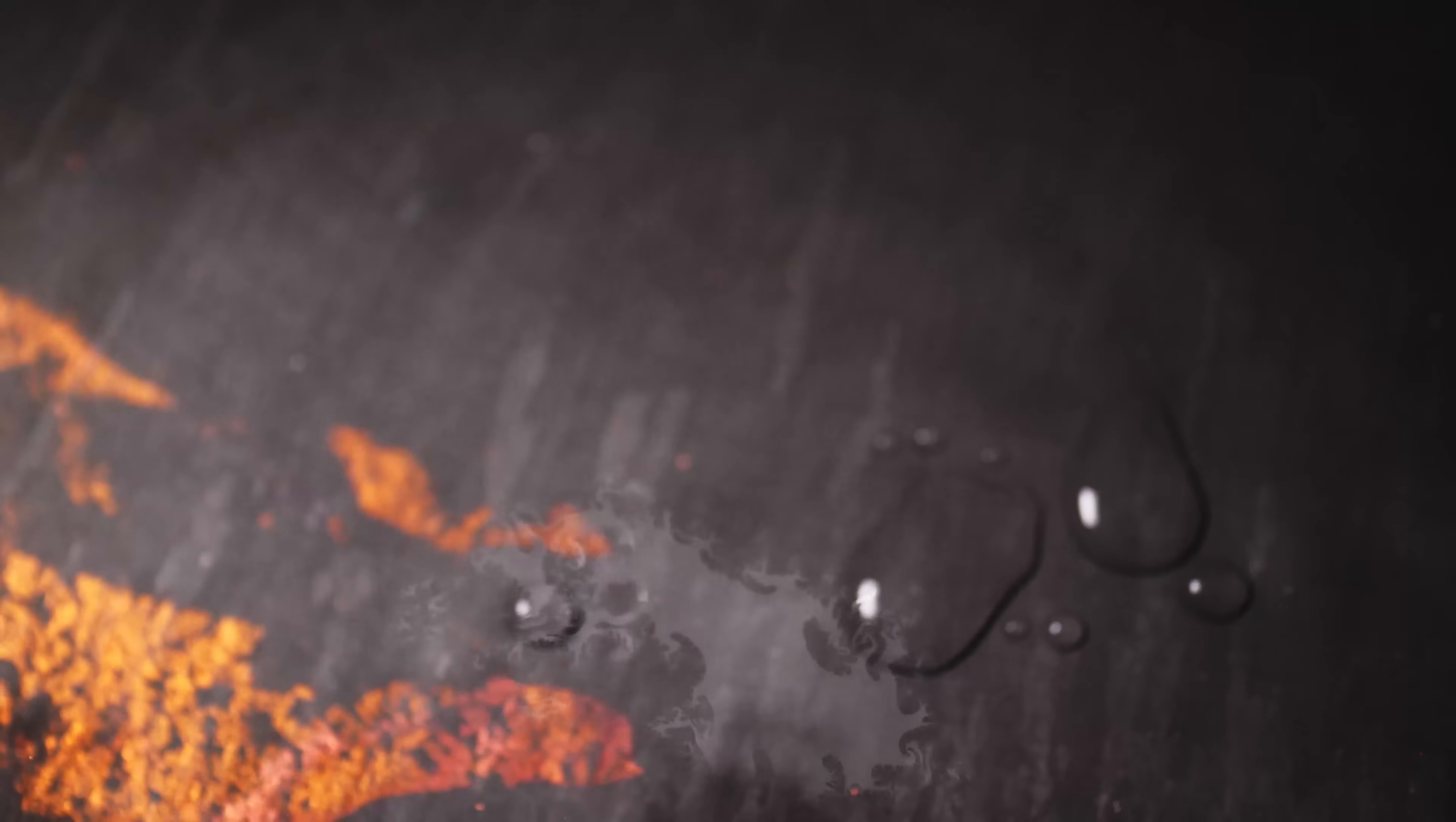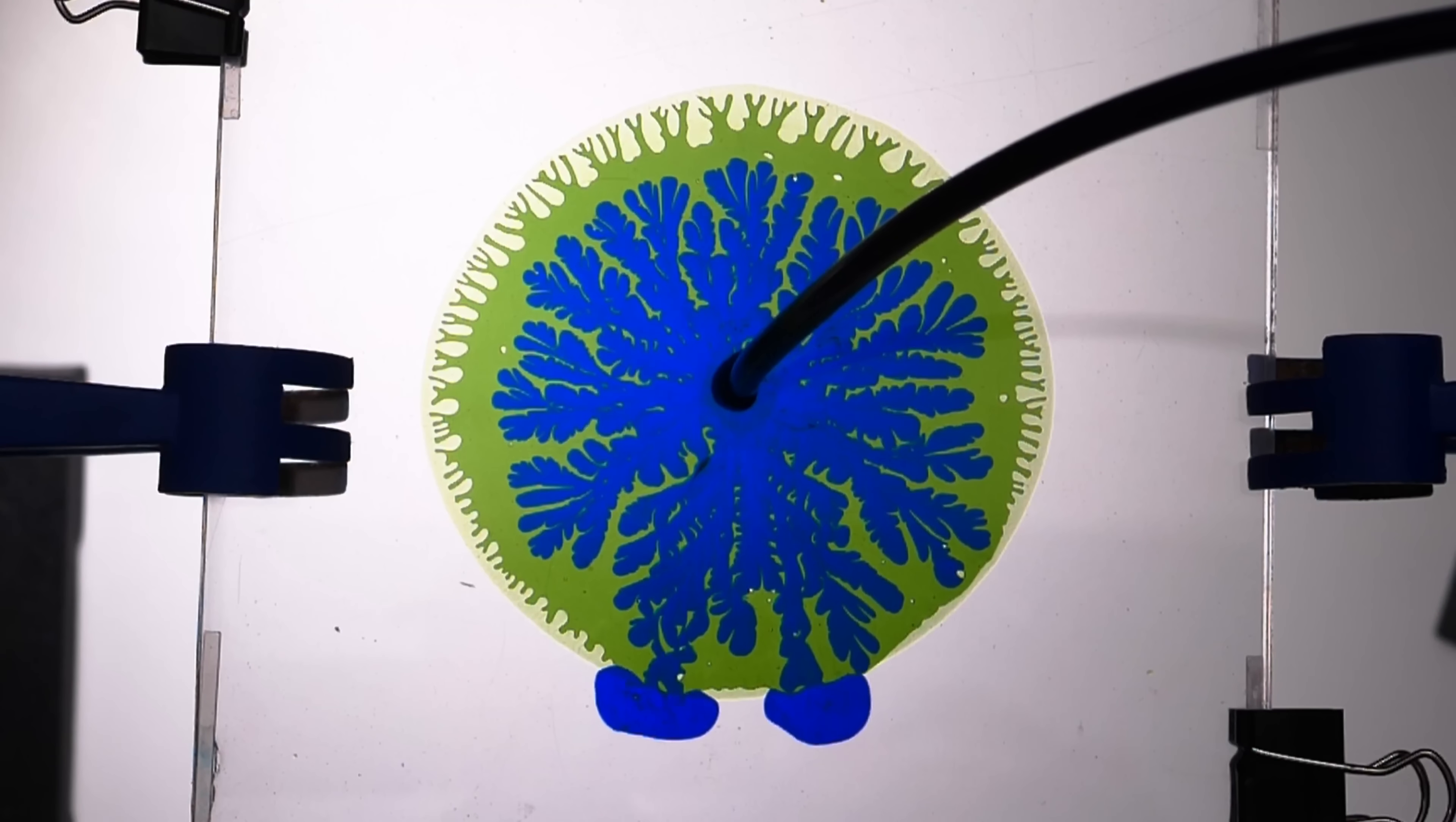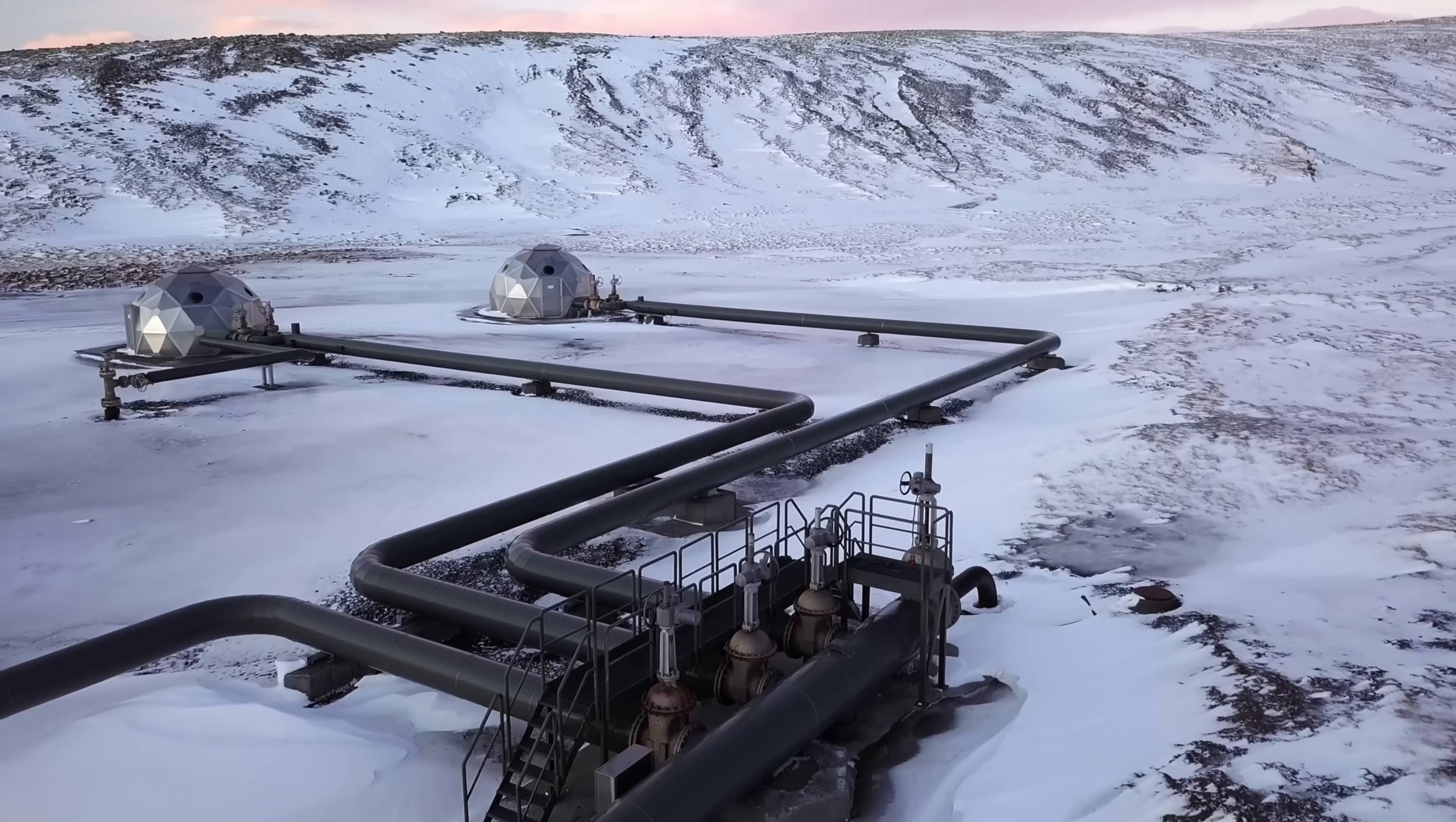The reason we see the viscous fingering pattern in a Hele-Shaw cell is because the plates of the Hele-Shaw cell provide lots of friction. But that's not the only way you can do it—you can achieve high friction in a porous 3D medium as well.